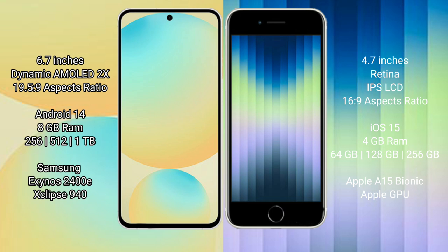The Samsung Galaxy S24 FE runs on the Android 14 operating system, while the iPhone SE runs on iOS 15. The Samsung Galaxy S24 FE comes with 8GB RAM and 128GB, 256GB, or 512GB internal storage options, powered by the Samsung Exynos 2400E processor with an Xclipse 940 GPU.